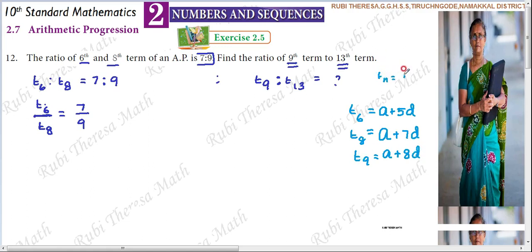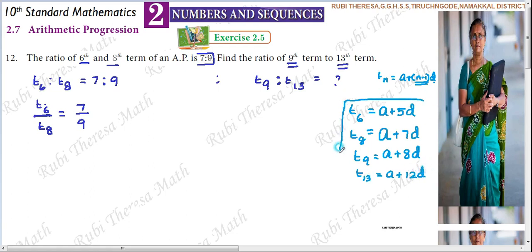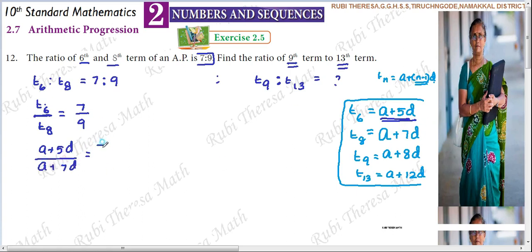The formula is: Tn equals a plus (n minus 1) into d. So T9 equals a plus 8d, and T13 equals a plus 12d. Now we do substitution.